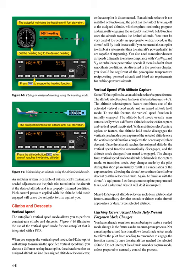Climbs and Descents — Vertical Speed. The autopilot's vertical speed mode allows you to perform constant rate climbs and descents. When you engage the vertical speed mode, the FD/autopilot will attempt to maintain the specified vertical speed until you choose a different setting, the aircraft reaches an assigned altitude set into the altitude selector/alerter, or the autopilot is disconnected. If an altitude selector is not installed or functioning, the pilot has the task of leveling off at the assigned altitude. You must be very careful to specify an appropriate vertical speed, as the aircraft will fly itself into a stall if you command a climb rate greater than the aircraft's powerplant is capable of supporting. You must also monitor descent airspeeds diligently to ensure compliance with VNE/VMO and VA or turbulence penetration speeds.